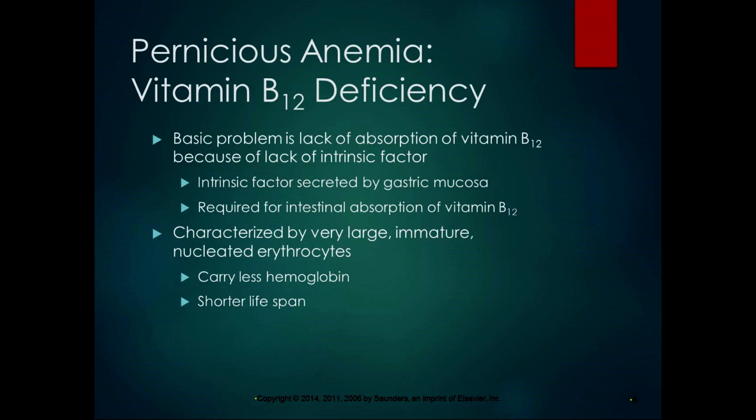Pernicious anemia is a B12 deficiency, also called megaloblastic anemia. The basic problem is lack of absorption of vitamin B12 due to lack of intrinsic factor. Intrinsic factor is secreted by the gastric mucosa and is required for intestinal absorption of vitamin B12. Pernicious anemia is characterized by very large and immature nucleated erythrocytes. Unlike our mature unnucleated erythrocytes, these carry less hemoglobin and have a shorter lifespan — our normal ones last about 120 days; the abnormal ones don't last as long.